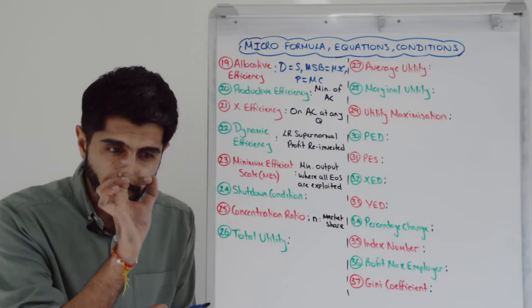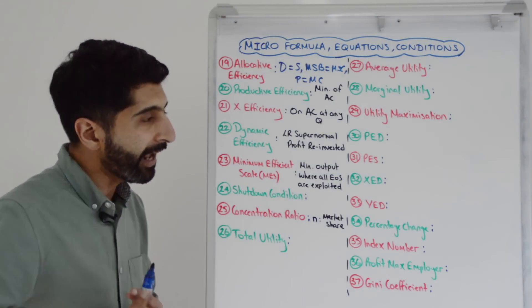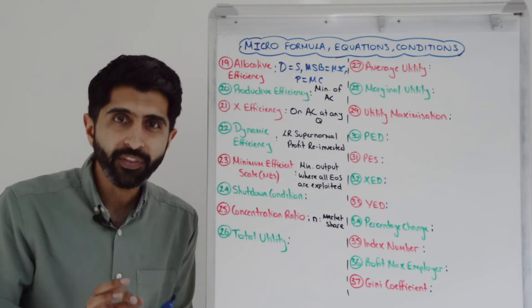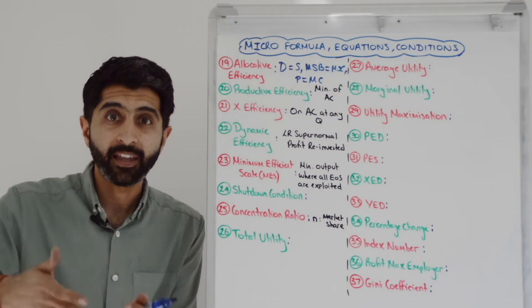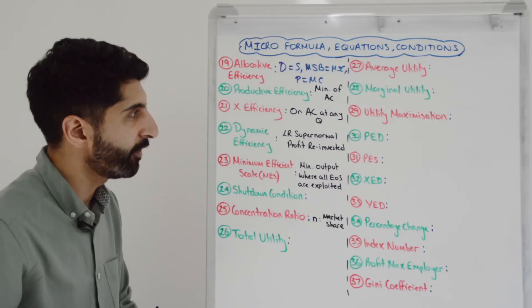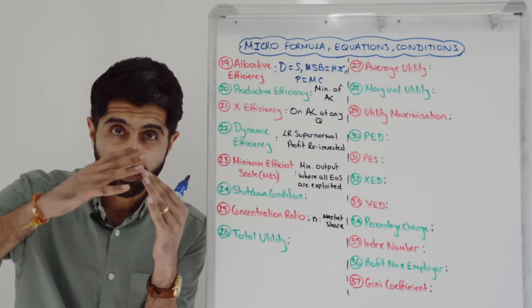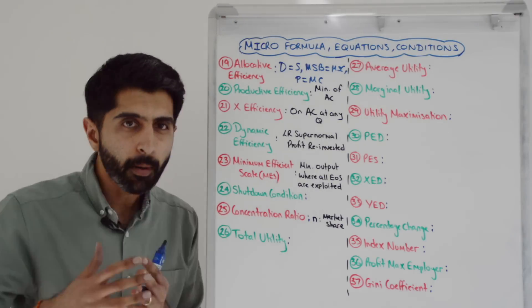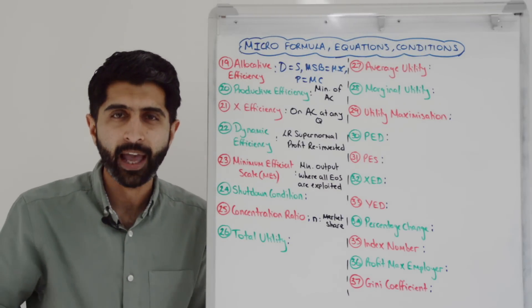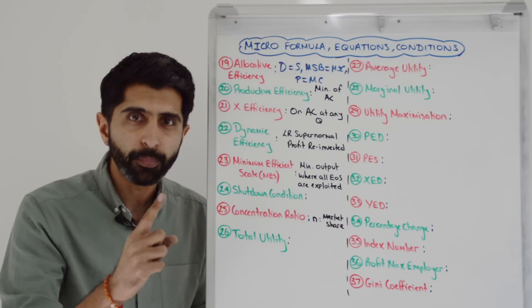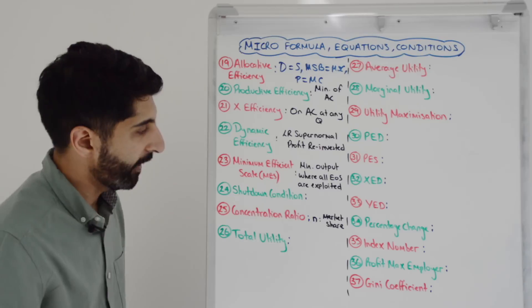Productive efficiency occurs when a firm is operating at the lowest point on their average cost curve — pure cost minimization. X efficiency occurs when a firm is operating on the average cost curve at any given quantity — not quite as extreme as productive, but economists would say a firm is minimizing waste and minimizing cost at any given quantity. For dynamic efficiency to occur, there needs to be long run supernormal profit, which is then reinvested back into the company. The minimum efficiency scale is the minimum output level whereby all economies of scale are fully exploited — it's the first output level where the LRAC curve stops decreasing.